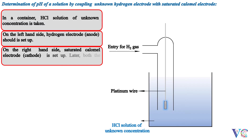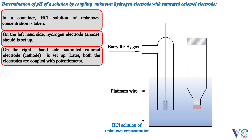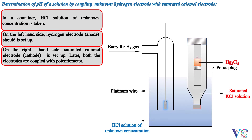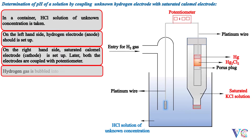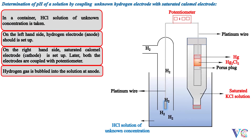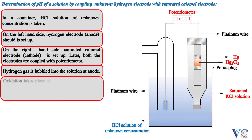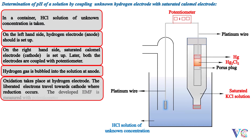Both the electrodes are coupled with a potentiometer. Hydrogen gas is bubbled into the solution at the anode. Oxidation takes place at the hydrogen electrode. The liberated electrons travel towards the cathode, where reduction occurs. The developed EMF is measured with the potentiometer.